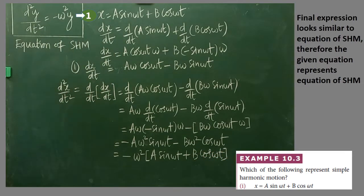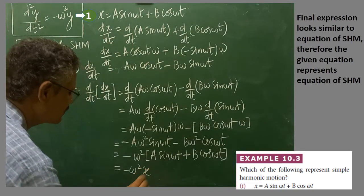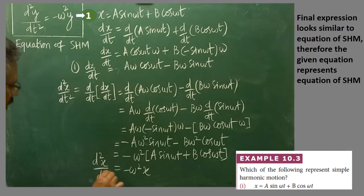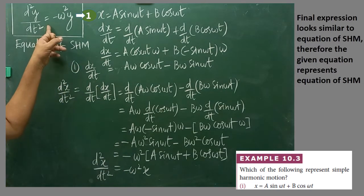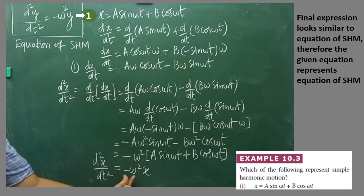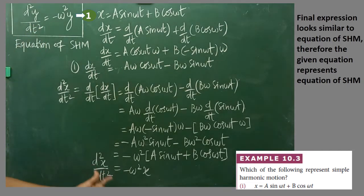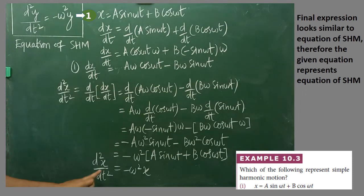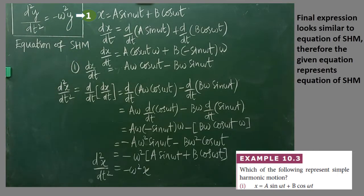In that format, the expression (a sin(ωt) + b cos(ωt)) is nothing but x. Therefore, d²x/dt² = −ω²x. Looking at this final expression, it is similar to the general equation of SHM. d²x/dt² = −ω²x resembles d²y/dt² = −ω²y. Both the LHS and RHS are similar in all aspects. That is why we can say that the given equation represents simple harmonic motion.